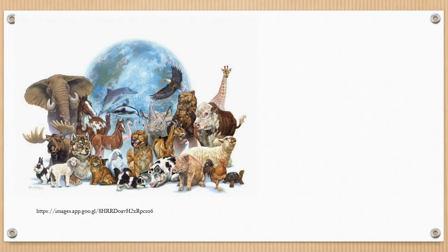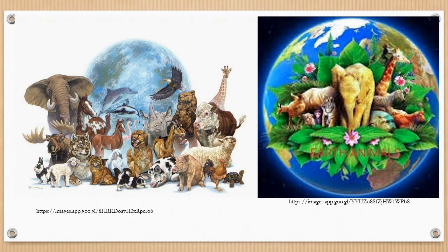Population characteristically increases in size in a sigmoidal or S-shaped logistic fashion. When a few organisms are introduced into an unoccupied area, the growth of the population is first slow — that is positive acceleration. Then it becomes very rapid, that is the logarithmic phase, and finally slows down as the environment resists increase in the number of organisms — that is negative acceleration. Because of this, the number of individuals on this planet becomes limited due to limited available resources.